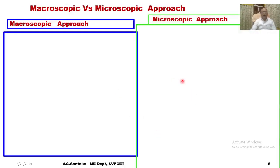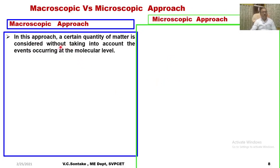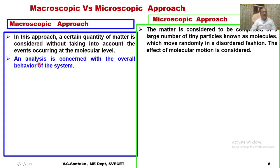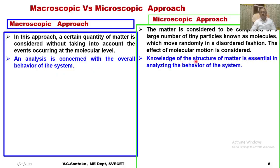Now let us have a point-wise comparison between macroscopic and microscopic approach. In the macroscopic approach, a certain quantity of matter is considered without taking into account the events occurring at the molecular level. Whereas in the microscopic approach, matter is considered to be comprised of a large number of tiny particles known as molecules which move randomly in a disordered fashion, and the effect of molecular motion is also considered. Analysis is concerned with the overall behaviour of the system. In the microscopic approach, knowledge of the structure of matter is essential in analysing the behaviour of the system.